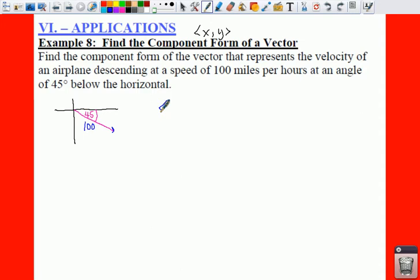So, if we take our magnitude, and we'll just call it v, times the cosine of theta. And then our magnitude of v times our sine of theta.